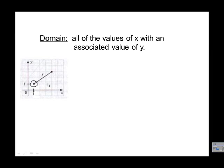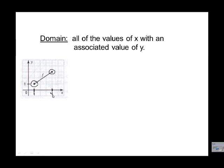Now what's our highest value of x? In other words, what's the point farthest to the right on the graph? It happens right there. Going along the x-axis: 1, 2, 3, 4. So our lowest value of x is 1 and our highest value of x is 4.